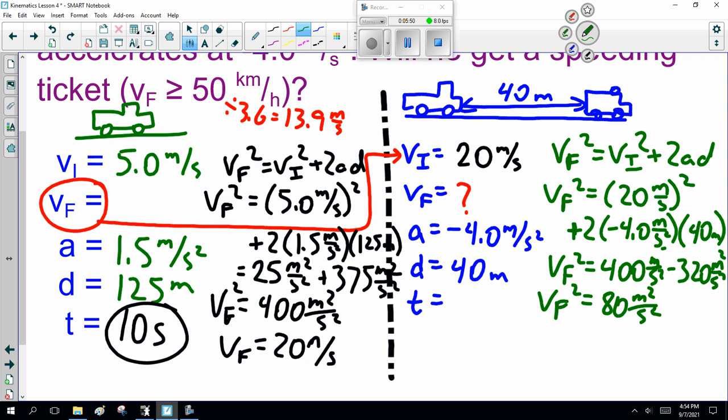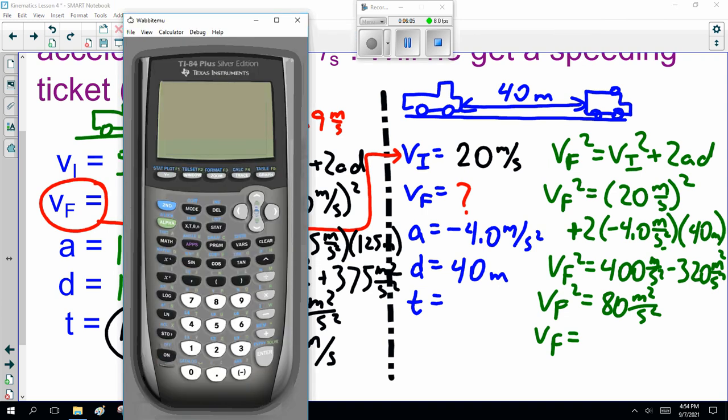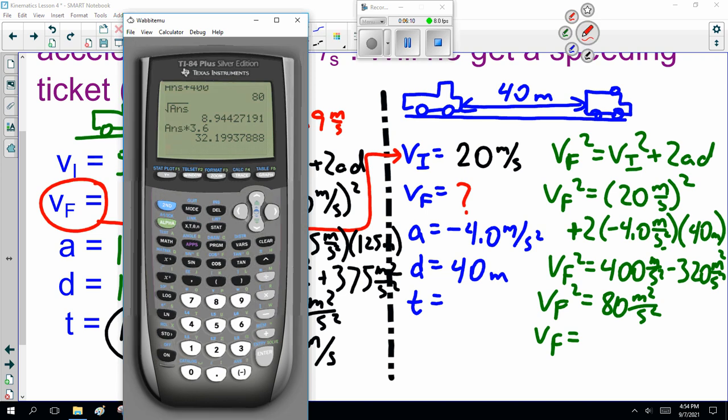So, velocity final squared is 80 m²/s². Now, once again, I'm doing that kind of quickly. As I said, right now, I don't expect you to be copying this out. I expect you to be looking at this and understand what I'm doing. So, V_F is square root of 80. Well, I just did it a minute ago. Turn on. Yeah, square root of 80 is 8.94.